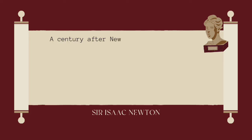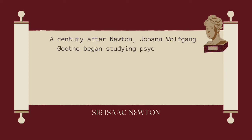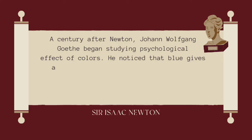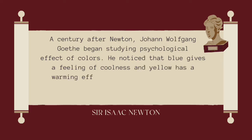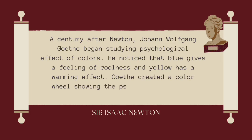A century after Newton, Johann Wolfgang Goethe began studying the psychological effect of colors. He noticed that blue gives a feeling of coolness and yellow has a warming effect. Goethe created a color wheel showing the psychological effect of each color.